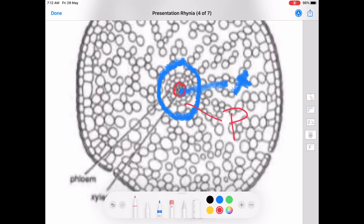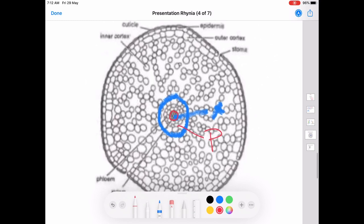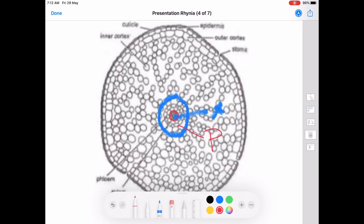In the case of Rhynia, it has a centrally occupied haplostele. Just outer to the haplostele is the cortex. The cortex is differentiated into outer cortex and inner cortex. The inner cortex consists of loosely packed cells with intercellular spaces.